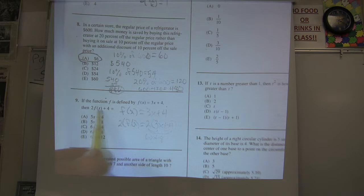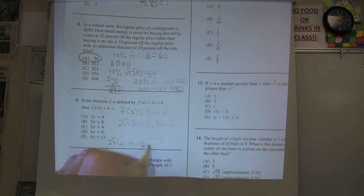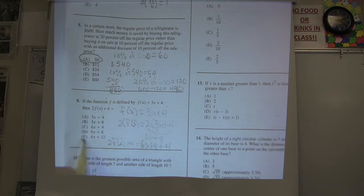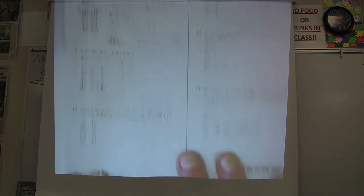But they want to know what's twice f of x plus 4. So twice f of x plus 4 is going to be what we got, 6x plus 8 plus 4. And so I get choice E, because you add the 8 and the 4.